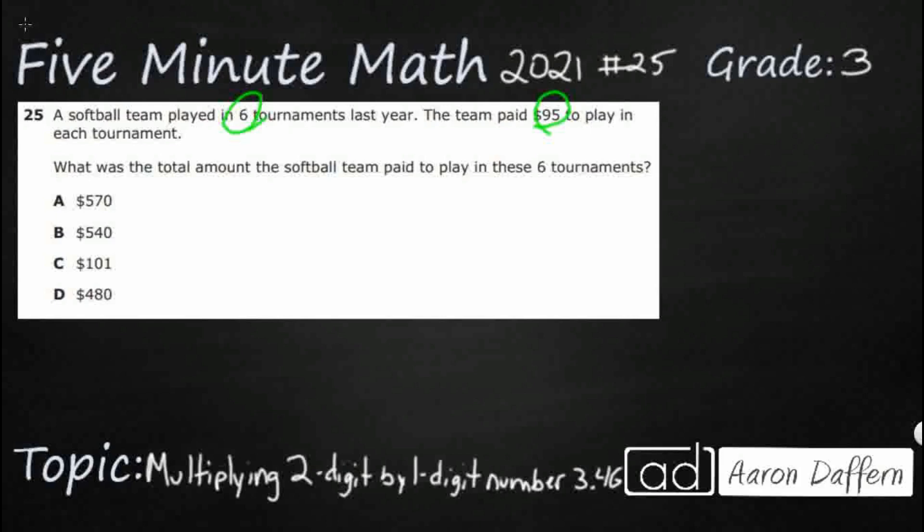There are many different ways that we could solve this problem and I will show you quite a few of them. First, let's just look at what we consider the standard algorithm. So this is just the normal way of 95 times 6.